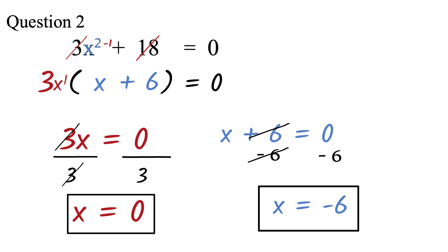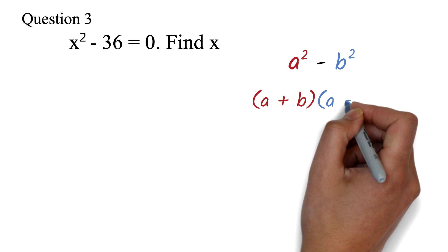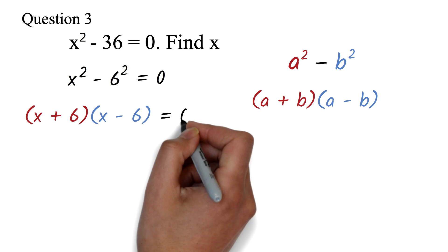Now let's look at solving quadratic equations using the difference of two squares. Question 3: x squared minus 36 equals 0. Find x. This is a difference of two squares question. In math, if you have a squared minus b squared, you can factor it as a plus b times a minus b. The sign here must be minus — it cannot be plus for this to work. So we identify that 36 can be written as 6 squared and replace it, giving x squared minus 6 squared equals 0.